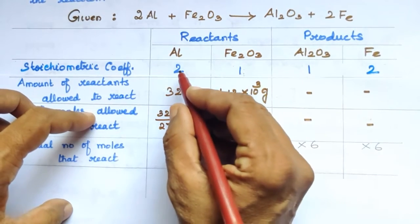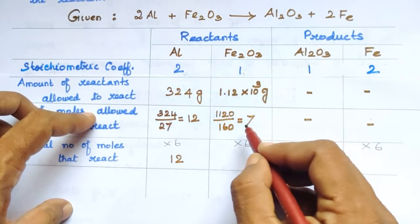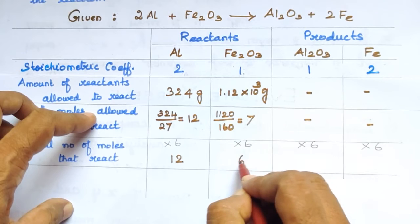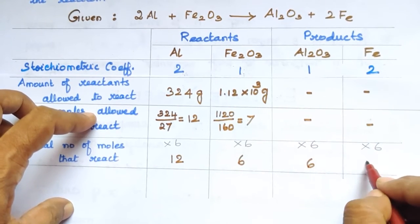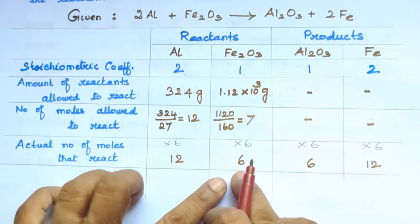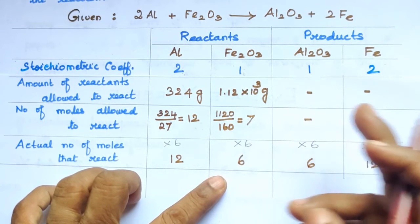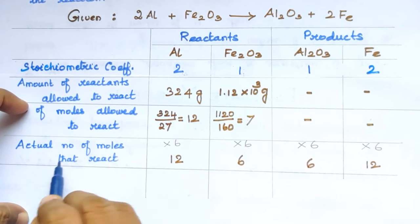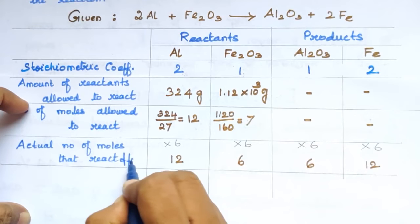So the actual moles that react: 2×6 = 12 moles of Al reacts with 1×6 = 6 moles of Fe2O3, giving 6 moles of Al2O3 and 12 moles of Fe. These are the actual moles of reactants consumed and products formed.